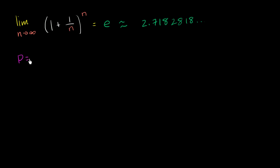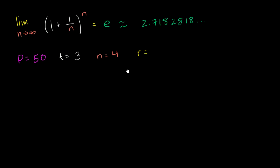Let's say that we're looking to borrow $50, so our principal is $50. We're going to borrow it for three years, so our time t in years is three. And let's say we're not going to just compound per year — we're going to compound four times a year, or every three months. And let's say that our interest rate, if we were only compounding once per year, would be 10%.